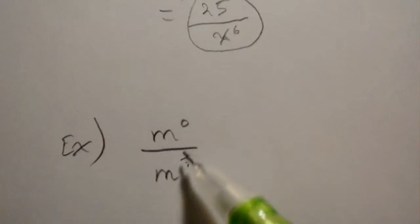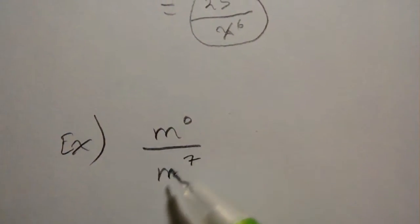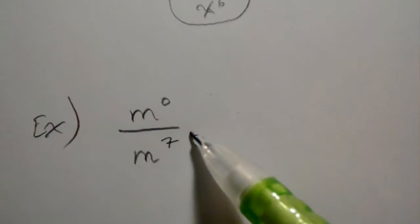We'll do one more here: m to the 0 power divided by m to the 7th power. So there's two ways you can tackle this.